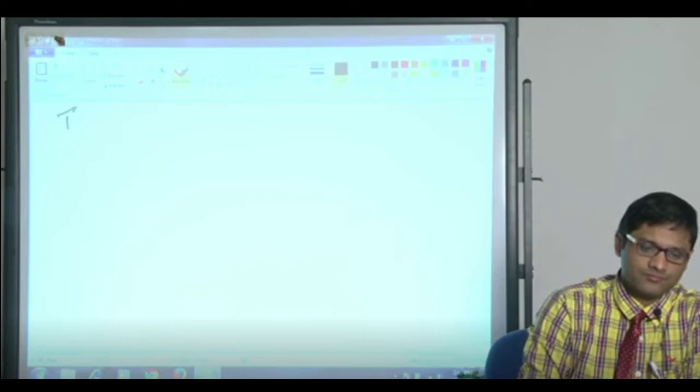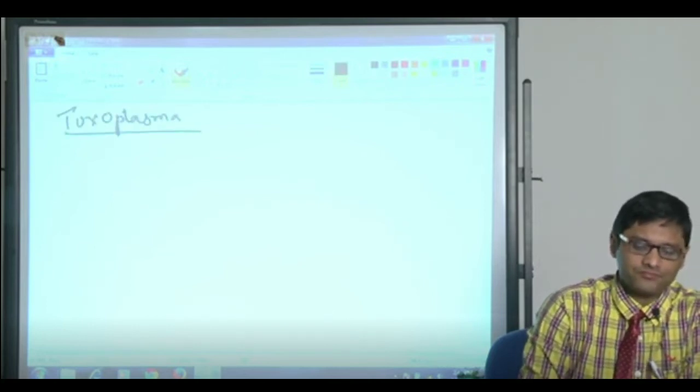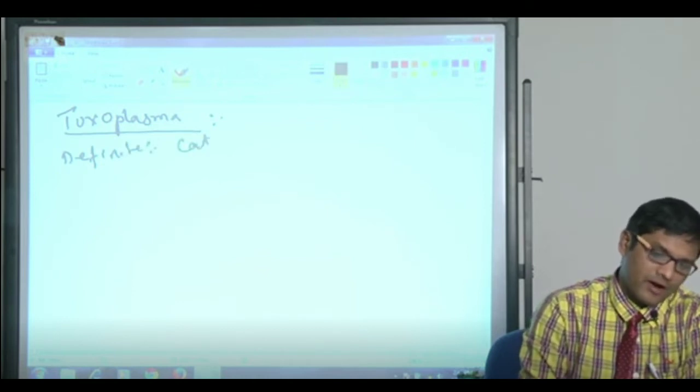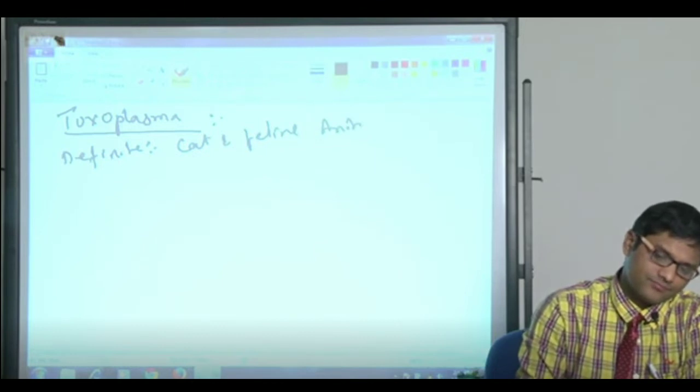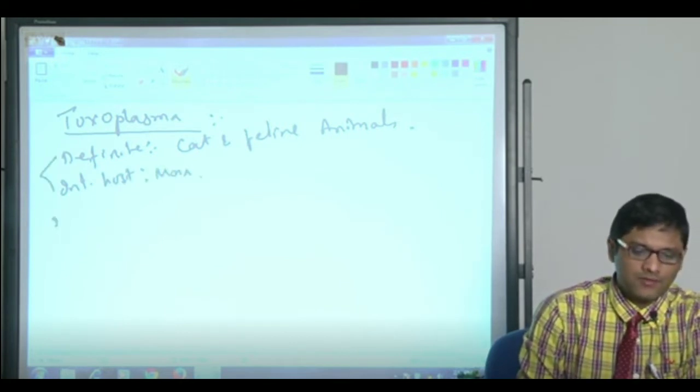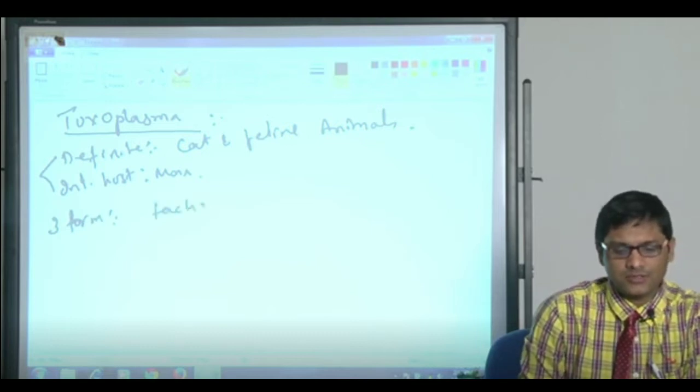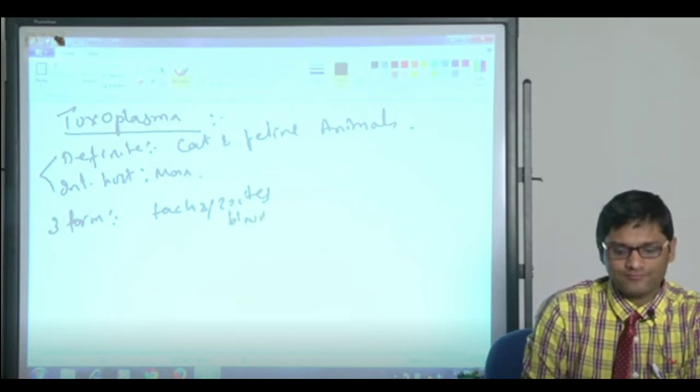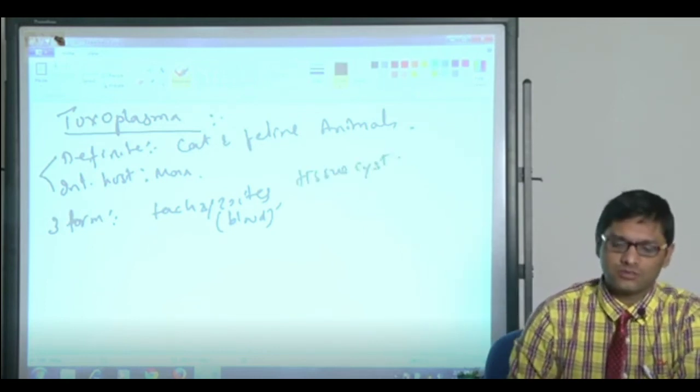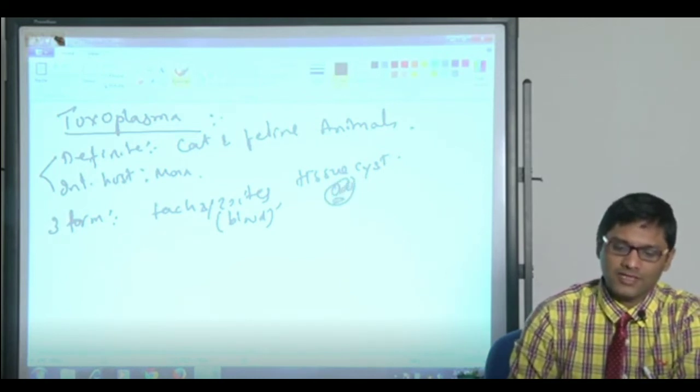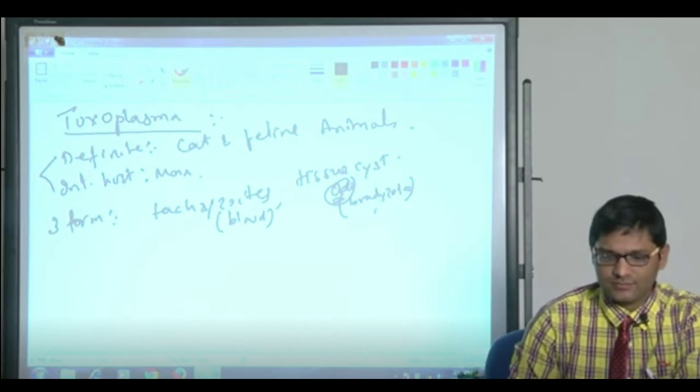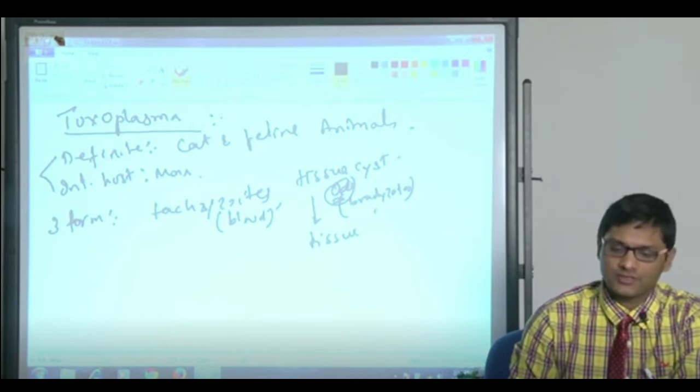Coming to Toxoplasma, they say that the definitive host are cat and other feline animals. The intermediate host of course is man. It exists in three morphological forms: it has tachyzoites which are usually found in blood, it has tissue cysts, and it exists as a tissue cyst containing many small bradyzoites. A tissue cyst is composed of bradyzoites inside and is usually seen in tissues, organs, and muscles.